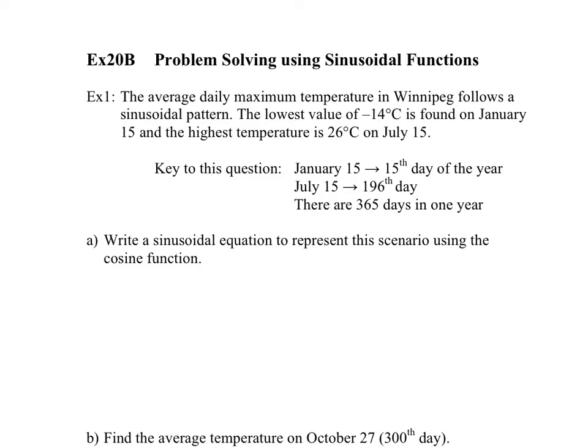Alright, so the average daily maximum temperature in Winnipeg follows a sinusoidal pattern. If you think about it, every June or July, let's call it, every July we have the highest average temperature on a certain day, and then every January we have the lowest possible temperature.